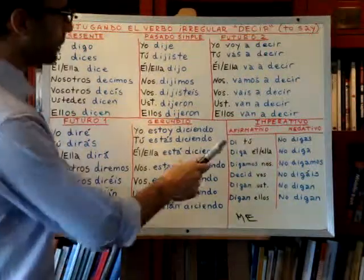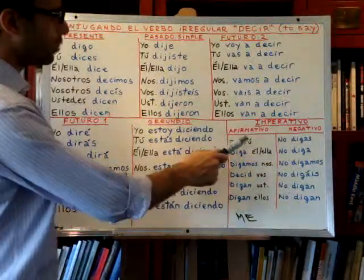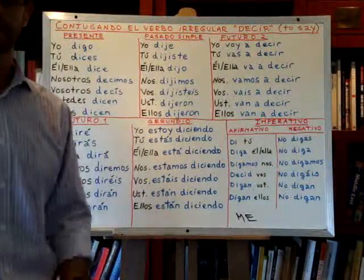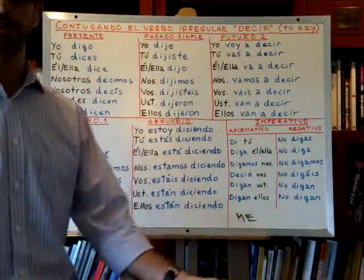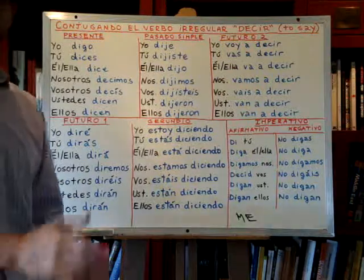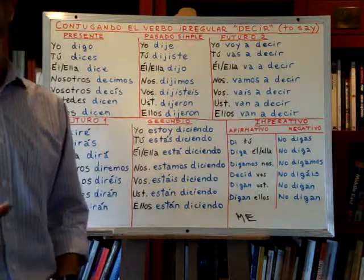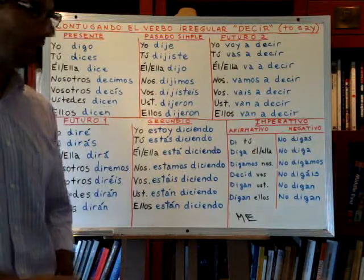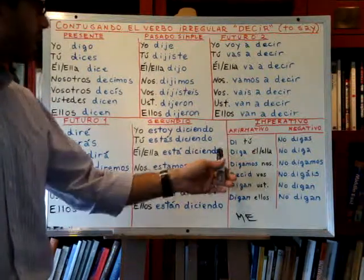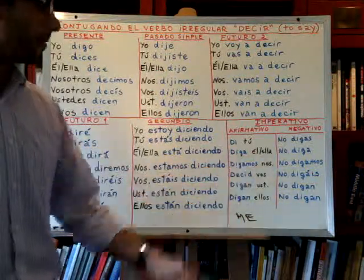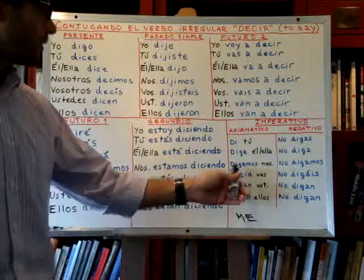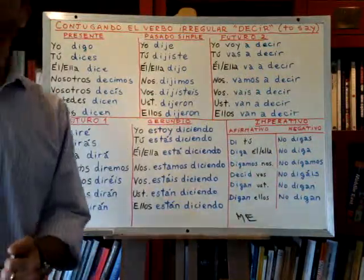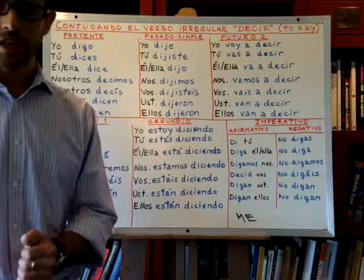The imperative in the affirmative — we were saying: di, or tu di, meaning 'say.' Say yes is di que sí. Remember, we add the word que right after di, after the verb. Then we have diga for él, and digamos for nosotros. For example, digamos que sí.